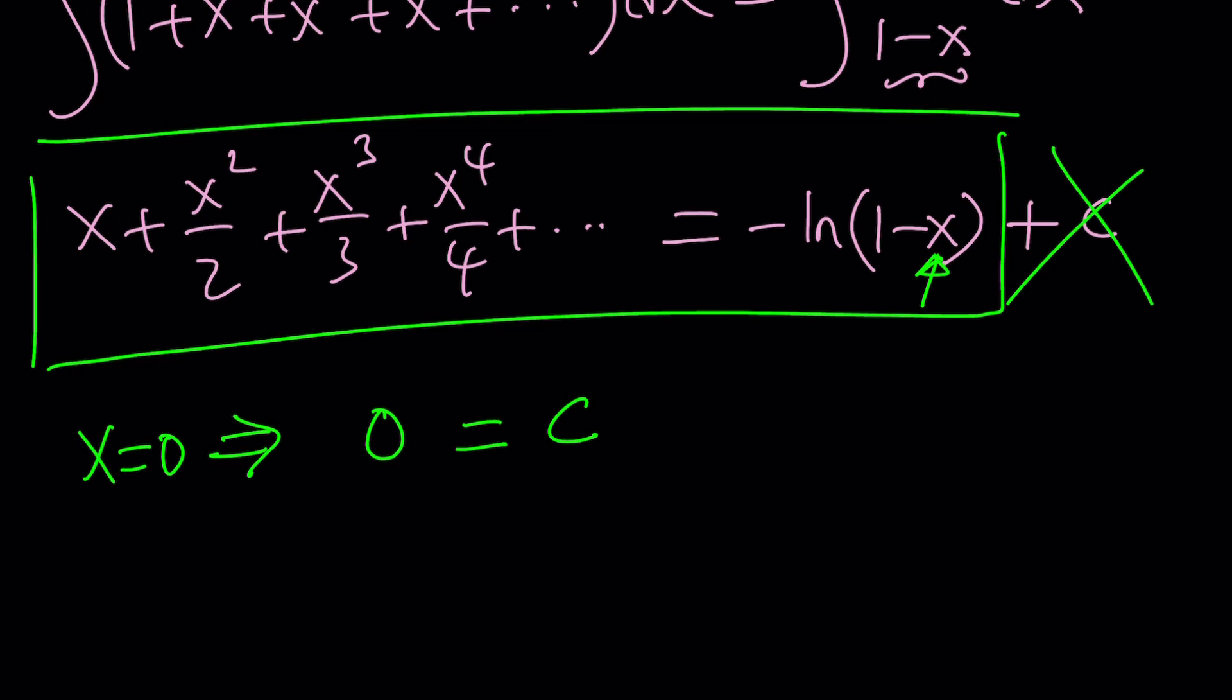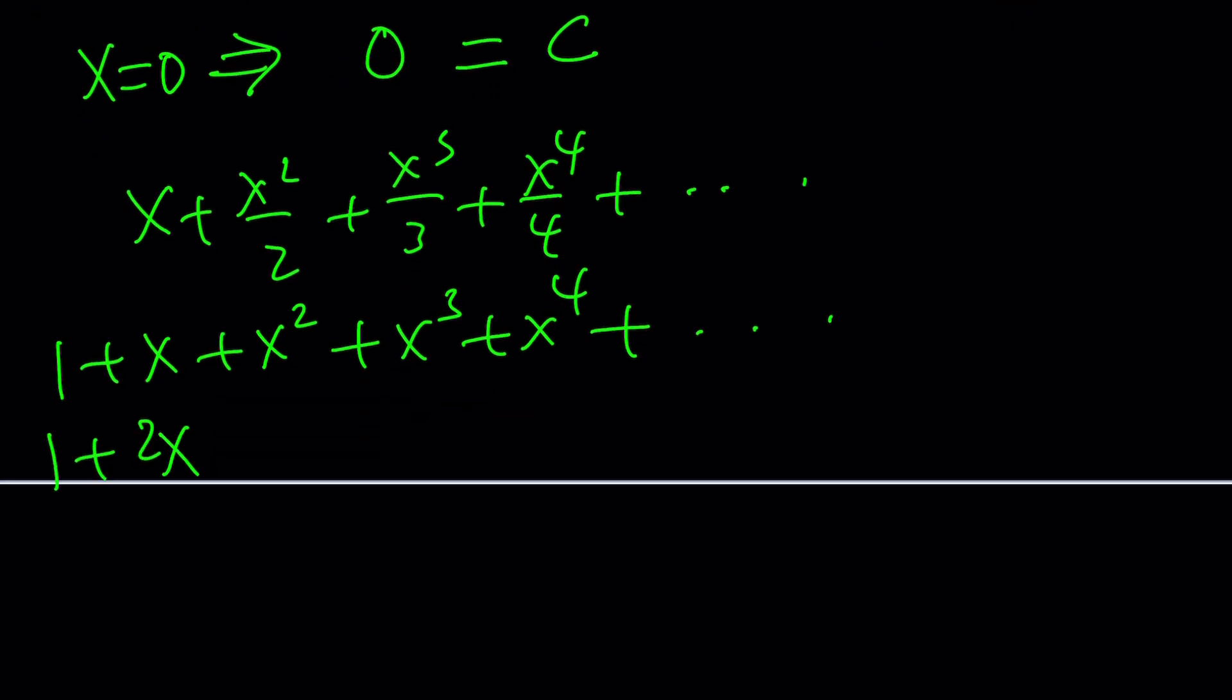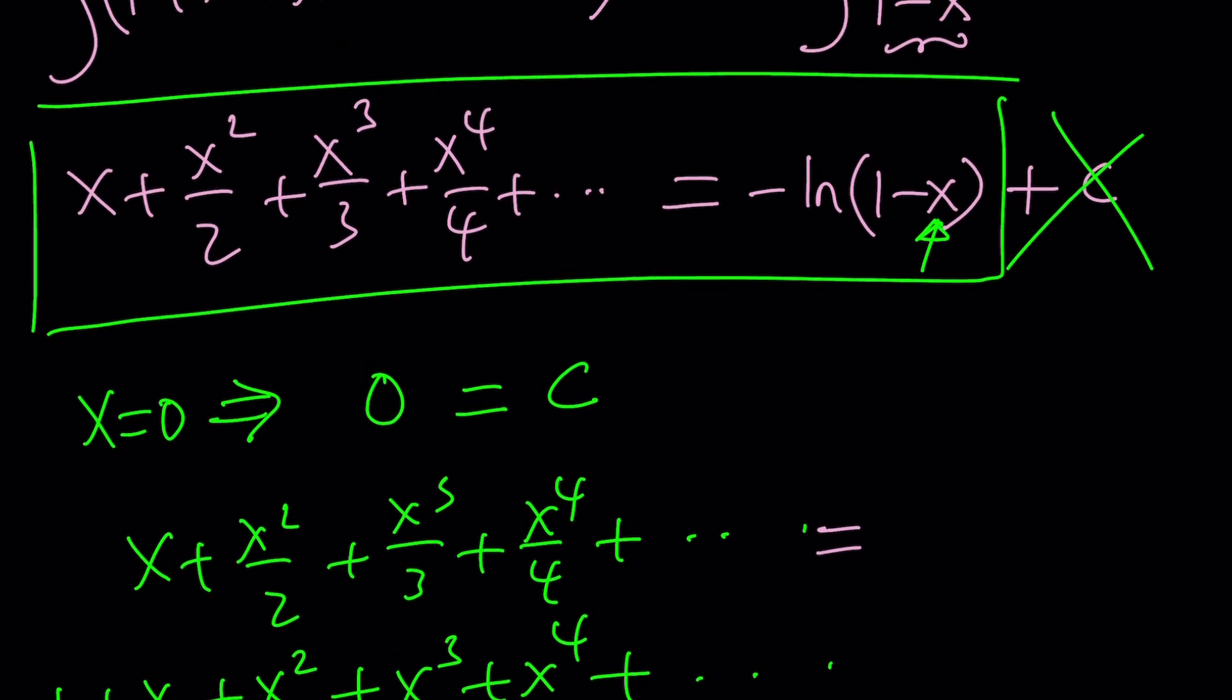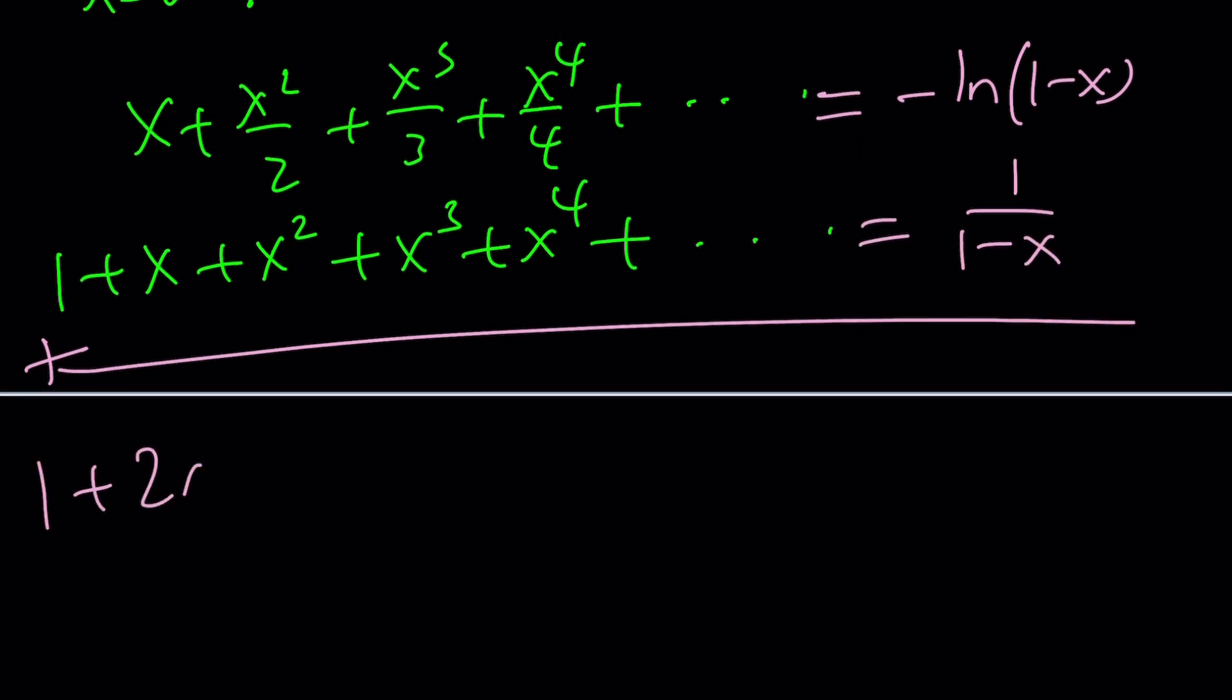So this is our sum in the infinite case, where x is between -1 and 1. What can we do with this? Can we add these two things? We can give it a try: x + x²/2 + x³/3 + x⁴/4... and 1 + x + x² + x³ + x⁴... When you add these, you get 1 + 2x + 3x²/2. That brings us closer to what we want. This is -ln(1-x) and this is 1/(1-x). When you add them, you get 1 + 2x + 3/2 x² + 4/3 x³ + 5/4 x⁴ and so on, which equals 1/(1-x) - ln(1-x).